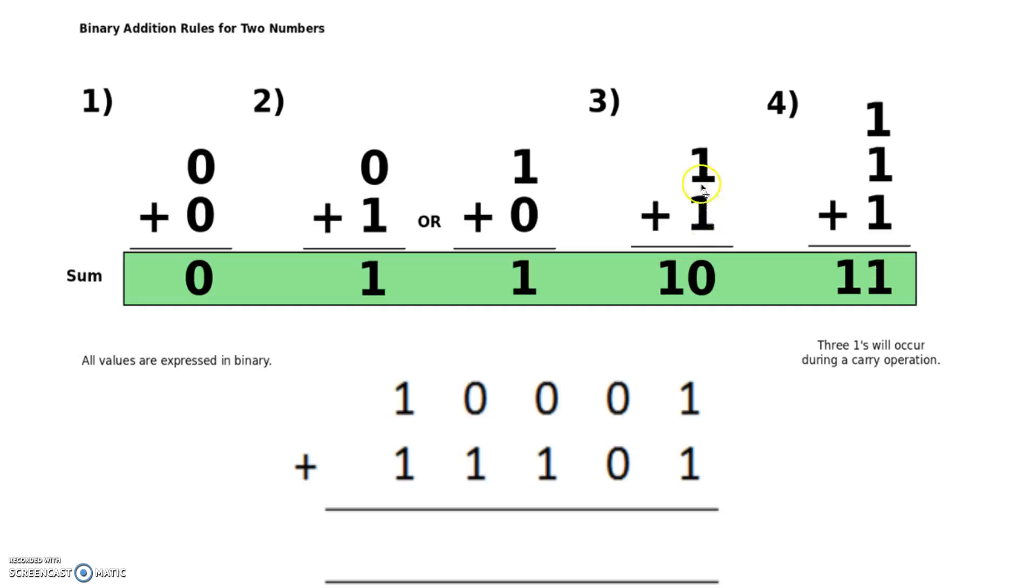To put it another way, in example number three, because this column cannot contain any more than one and we've got two, we carry the two over to the next column. And in this one, because we've got three, we carry two over to the next column and it leaves one left over.